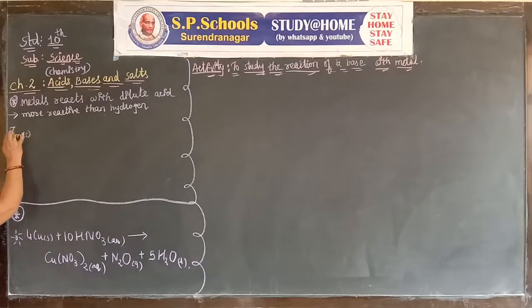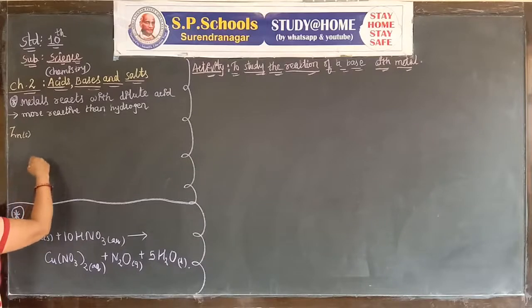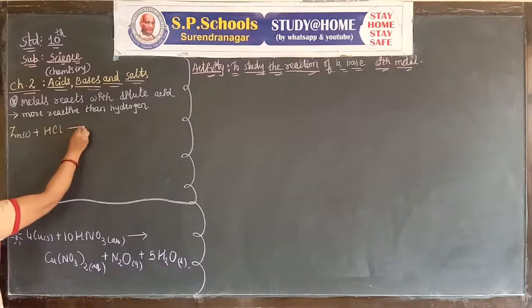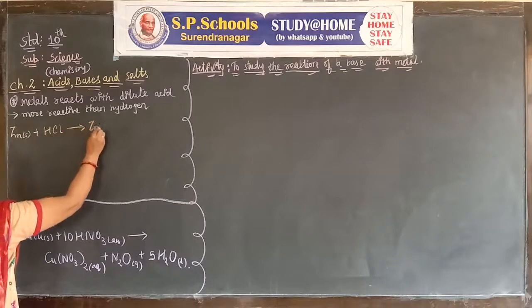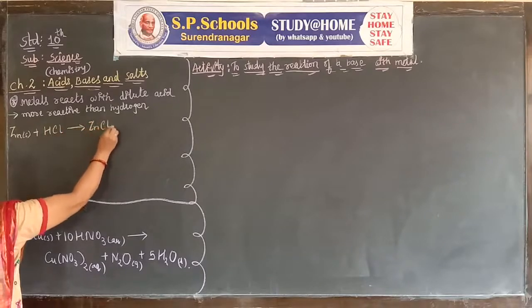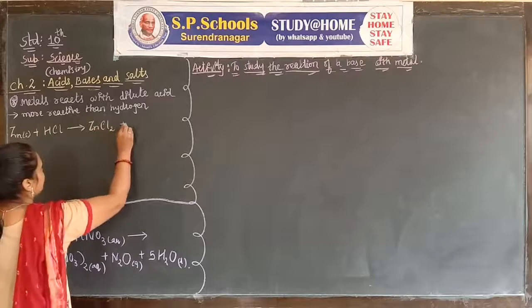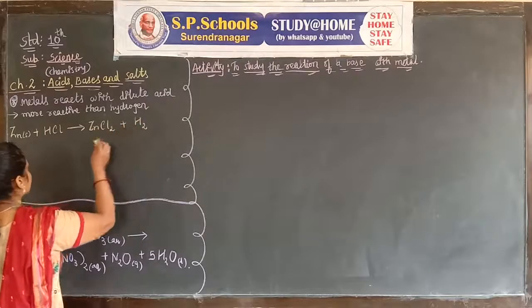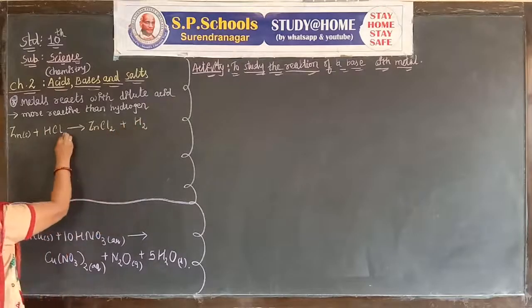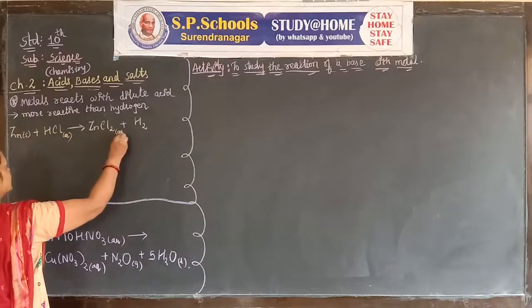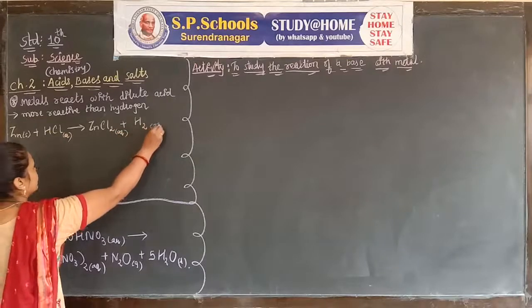Zinc is more reactive than hydrogen. When Zn reacts with HCl, it forms ZnCl₂ plus H₂ gas.